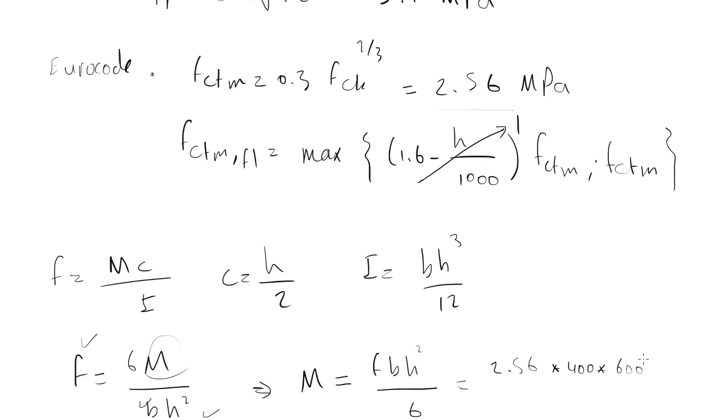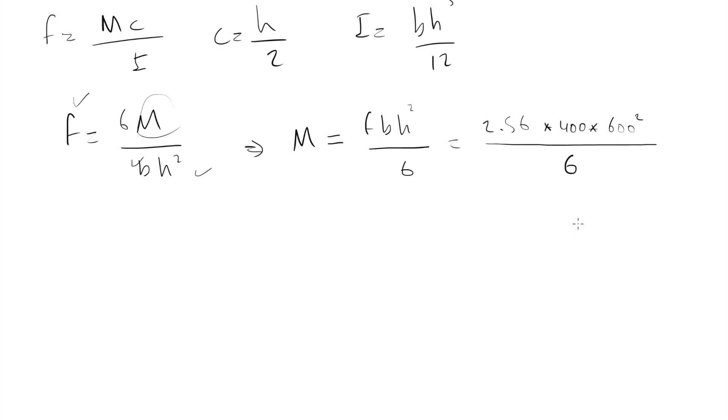Now this value will be in Newton millimeters, but I want it in kilonewton meters to reduce the zeros that I have, so it will be divided by 10 to the power of 6. So M equals to 61.44 kilonewton meter.